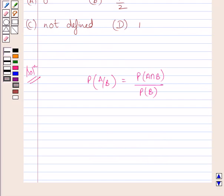Now we are given that probability of B is equal to 0. Now, we know this expression is defined only when probability of B is not equal to 0.